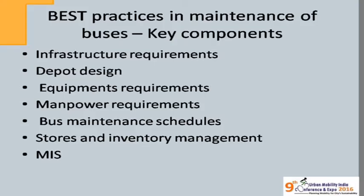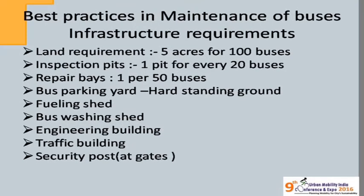For the infrastructure requirement when maintaining buses: land requirement is five acres for 100 buses; inspection pit — one pit for 20 buses; repair bays — one for 50 buses. These are not ballpark figures; a lot of automobile engineering has gone into them. It all depends upon the volume of work generated. Parking yard with hard-standing ground is very important, and many cities are lacking this. Also required: fueling shade, washing shade, engineering building, traffic building, and security post. You cannot compromise with any of these components if you want best maintenance practices.